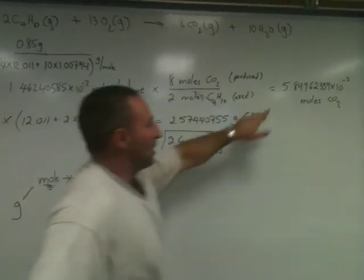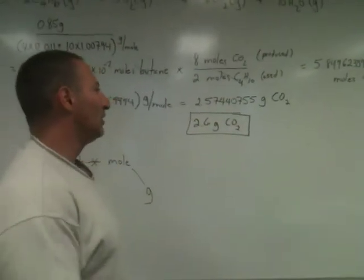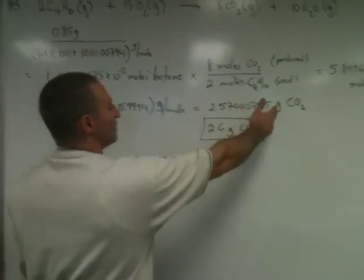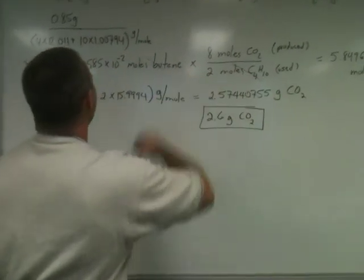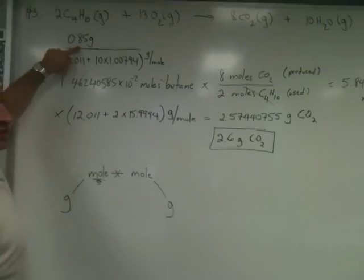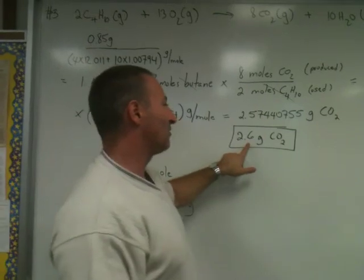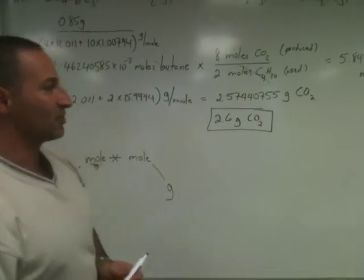So this number multiplied by that number gives you 2.5744 grams of CO2. Of course, we're not going to maintain all these decimal places. We only had two significant figures in the original question. So we can only report our answer to two significant figures. Therefore, we have to round it off to 2.6 grams of carbon dioxide is produced.